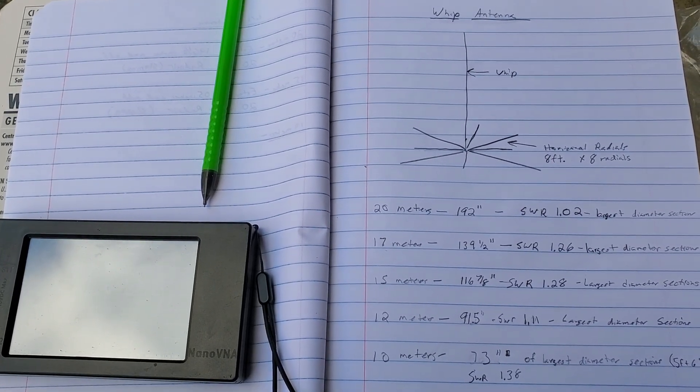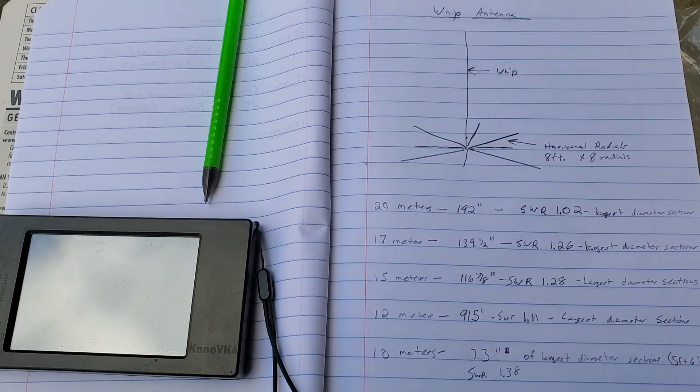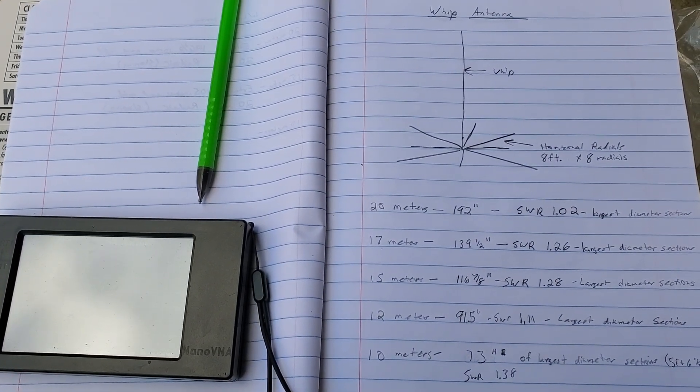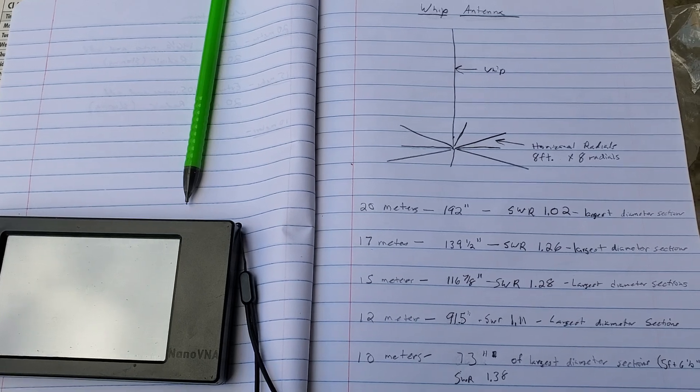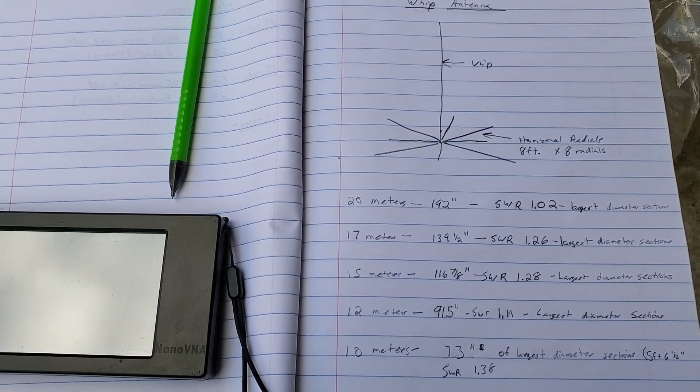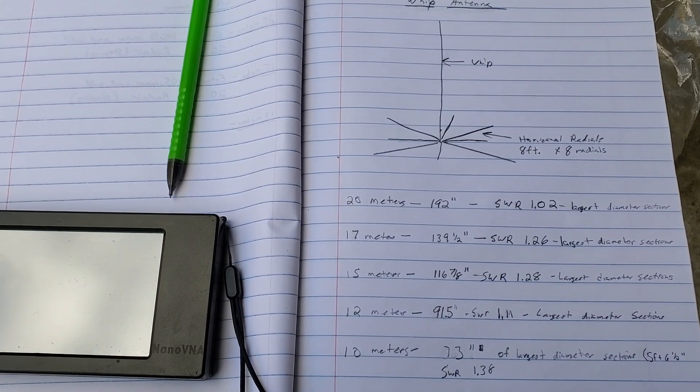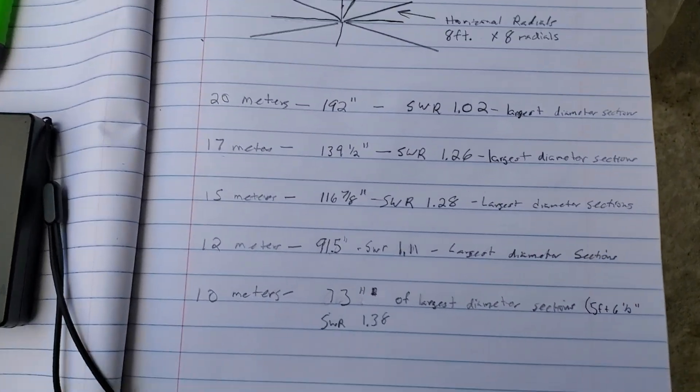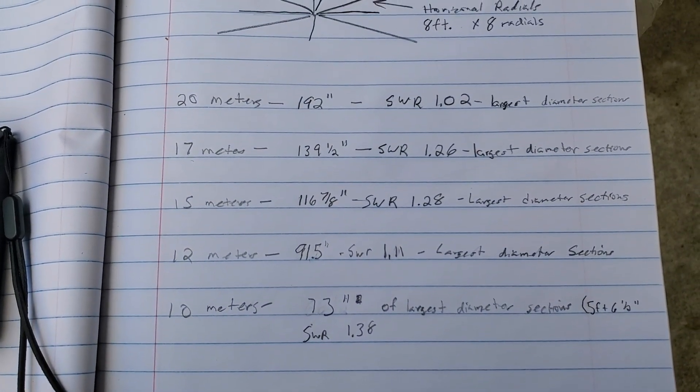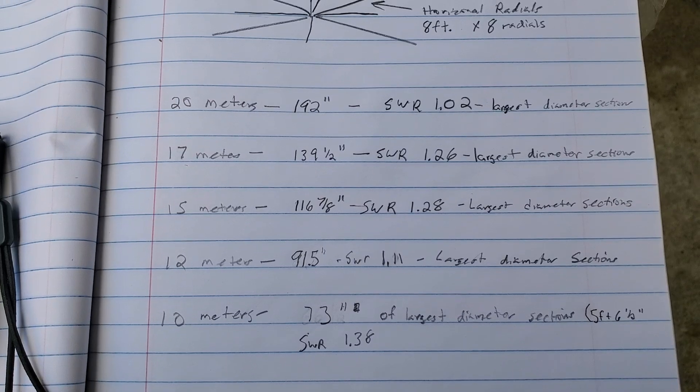We've got a whip antenna that's 18.5 feet long, and if we take that antenna and attach eight horizontal radials just laying on the ground, each of them eight feet long, we can pick up all of these bands right here, and the SWR is awesome on all of these.